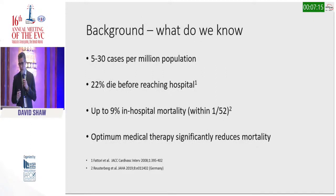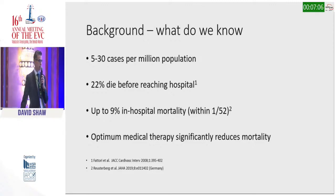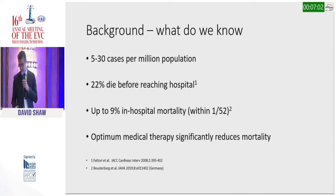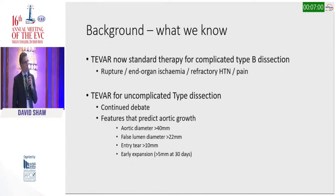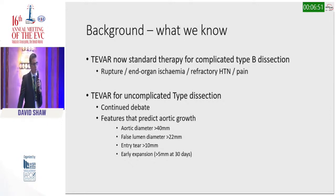Just a little background: even though Type B aortic dissection is not very common, it is dangerous, it kills, and optimum medical therapy is the one thing that significantly reduces mortality.